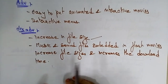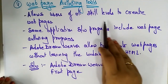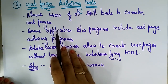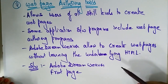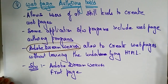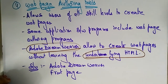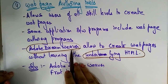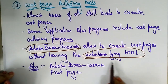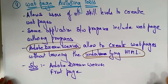The next authoring tool is the web page authoring tool, which allows users of all skill levels to create web pages. Some application software programs include web page authoring programs. Adobe Dreamweaver is one such software that allows creating web pages without learning the underlying HTML, because Dreamweaver already has built-in HTML functions — inbuilt functions are automatically available in the software. The software used here includes Adobe Dreamweaver and FrontPage.